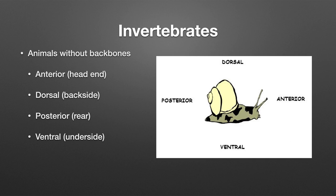Dorsal is the backside — you can remember that with the dorsal fin of a shark, that fin along its back. Ventral is the belly side; if you pet a cat on the ventral side, chances are after the third or fourth pet you're going to have your arm mauled. So ventral is the bottom, the belly. Posterior is the butt end, anterior is the head end, and dorsal is the backside.